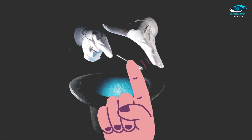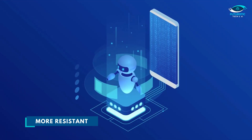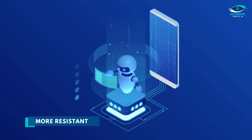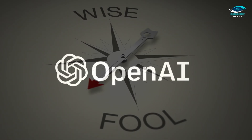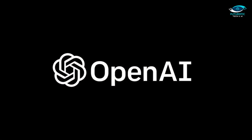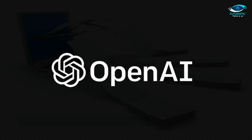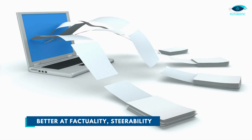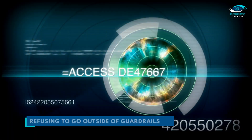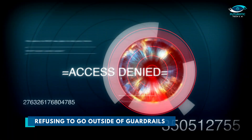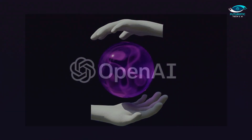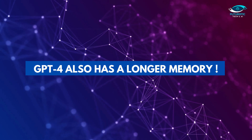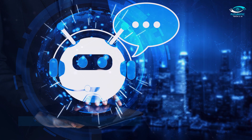You can't trick GPT-4 as easily, as it has been trained to be more resistant to malicious prompts compared to its predecessors, which were easily led astray. OpenAI has collected malicious prompts from users over the last year or two to train the model to be better at factuality, steerability, and refusing to go outside of guardrails. The new version is described as unprecedentedly stable, and OpenAI was better able to predict its capabilities.